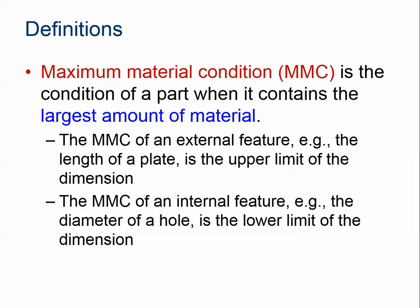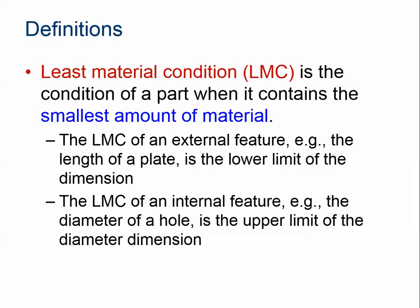In most cases, an internal feature is going to be a hole — a depression where material is taken away. If it uses a lot of material, that means it's actually smaller because more material remains, which is the opposite of an external feature. So if you want the MMC of an external feature, you're going to use the upper limit. If you want the MMC of an internal feature, you're going to use the lower limit. Its counterpart is the least material condition, or LMC, which is opposite for both — the part uses the smallest amount of material. For an external feature it's the lower limit; for an internal feature it's the upper limit. If the hole is larger, it's using less material to produce, so the LMC is the upper limit for a hole.